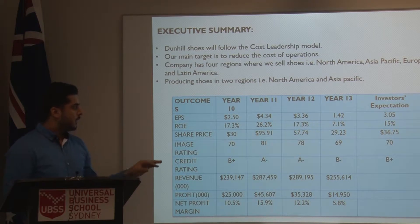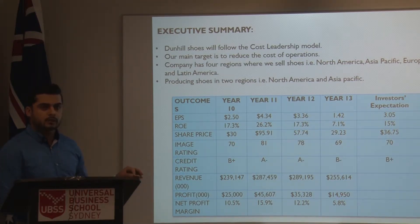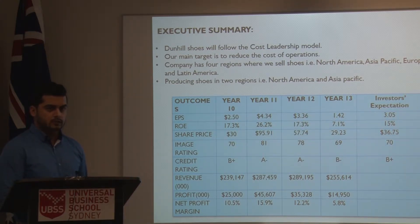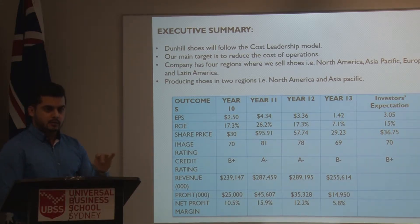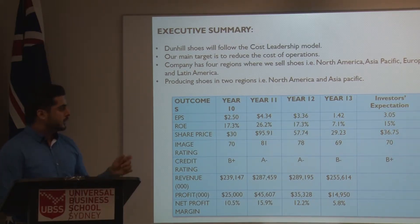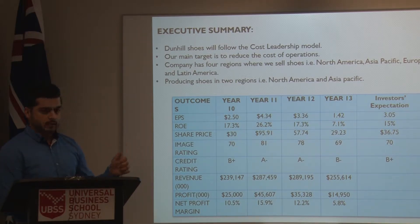The first change we made was to increase the quality of shoes in year 13. Before, we were selling five-star quality shoes. But when we looked at the snapshot of other companies, we saw that most companies were selling six-star and seven-star shoes. So we wanted to upgrade our quality, and that's why in year 13 we started producing six-star shoes.